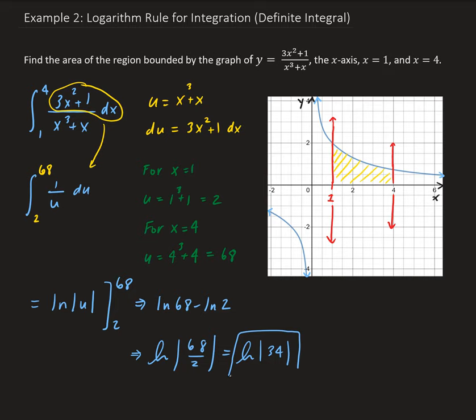All right, so that is the area of that bounded region. So this is in some units squared if this were for an application problem. So we did this by letting u be the denominator. And that gave us du, which replaces the numerator, and then we changed, we used the u substitution to change our bounds.